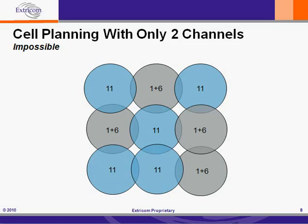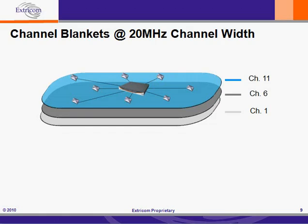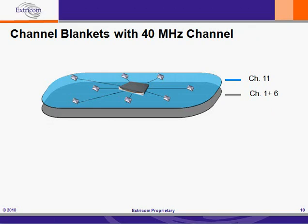Can we use channel bonding in a channel blanket architecture? The answer is a definite yes. Instead of three non-interfering channel blankets in the 2.4 GHz band, there will be two non-interfering channel blankets. The 40 MHz channel — channels 1 plus 6 — is one channel blanket, and the remaining channel 11 forms a second channel blanket. Since there is no need to cell plan, having only two 2.4 GHz channels doesn't present any planning problems. Co-channel interference is still zero.